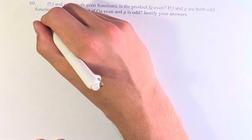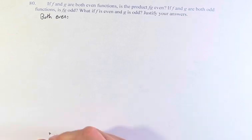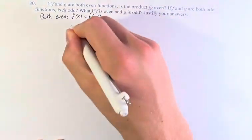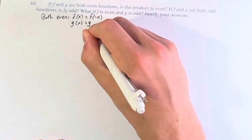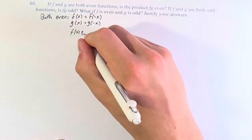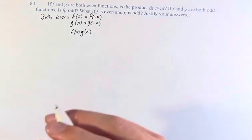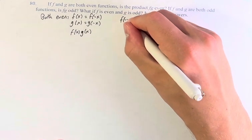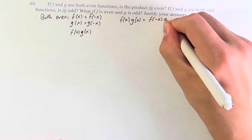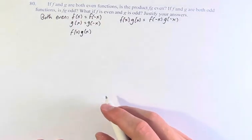So let's first find what happens if they're both even. If these functions are even, then that means f of x is equal to f of negative x, and g of x is equal to g of negative x. Now, what about f of x times g of x? Is this product even? This is asking: is f of x times g of x equal to f of negative x times g of negative x? By simple substitution, we can see that this is true.